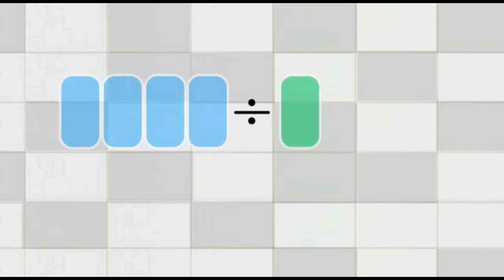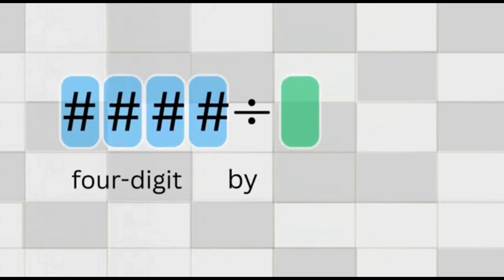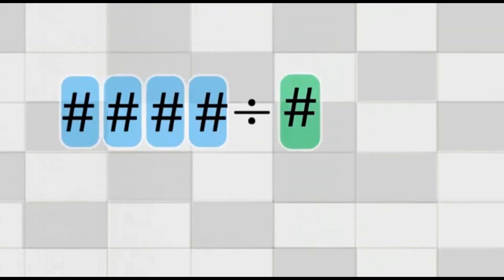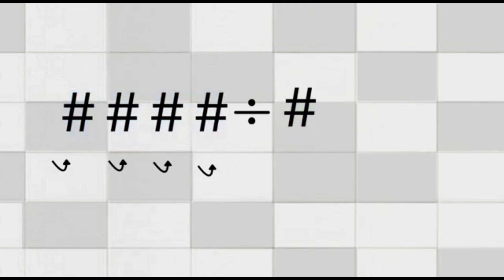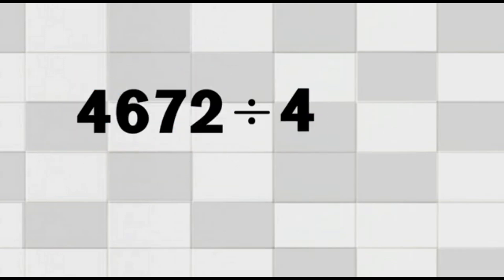Students, today we're going to learn how to divide a four-digit number by a one-digit number using something called the long division method. We'll take it slow, go step by step, and make sure everything makes sense. Let's get started with our example. We are going to divide 4,672 by 4.